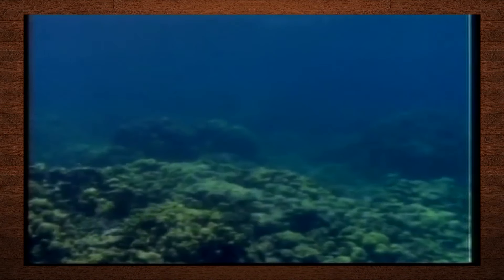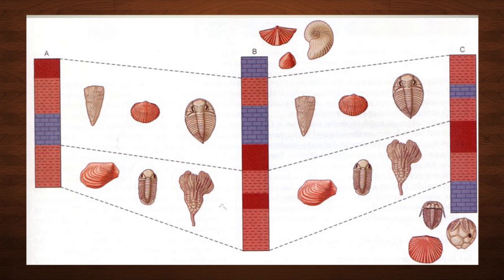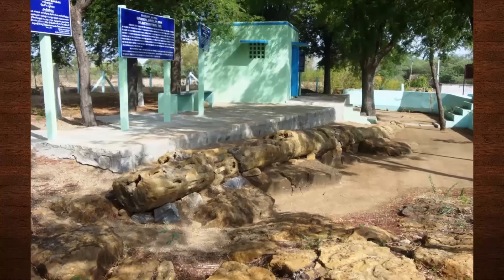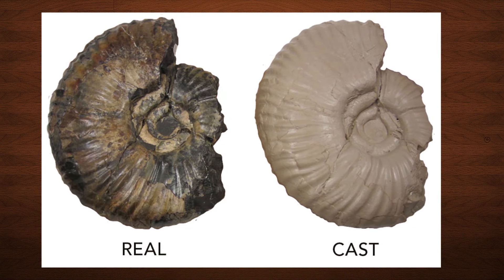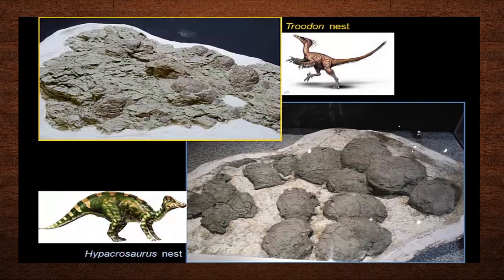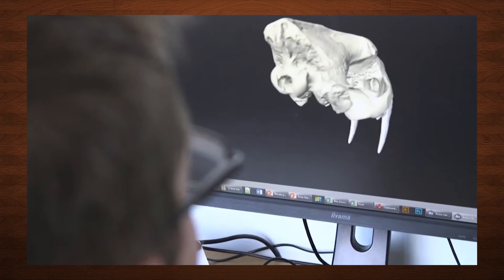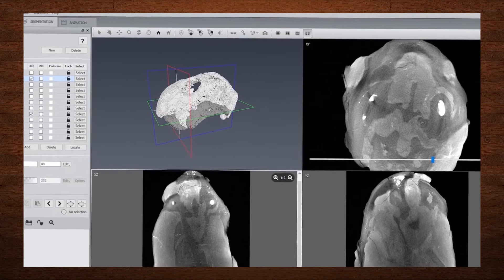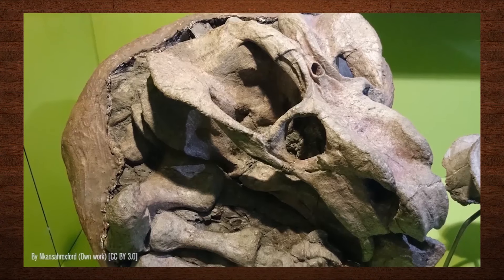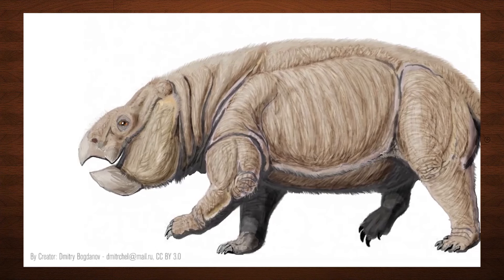Fossils have important uses in the field of biostratigraphic correlation, paleoclimate interpretation, top and bottom criteria for correct stratigraphic interpretation, paleogeographic reconstruction and economic geology for their different aspects. Paleontology incorporates knowledge from biology, geology, ecology, anthropology, archaeology and even computer science to understand the processes that have led to the organisation, evolution and destruction of different types of organisms since life arose.